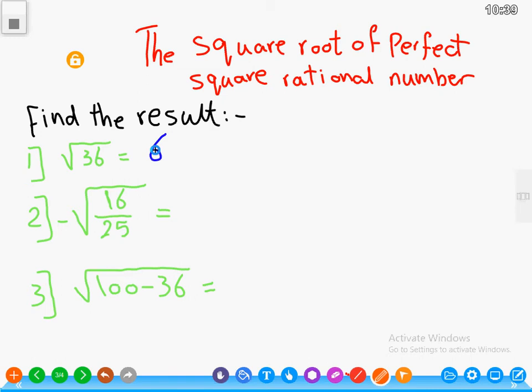And the root of 25 is 5. The result will be negative 4 over 5.